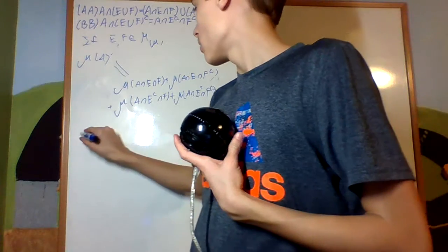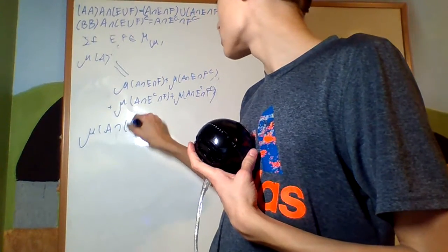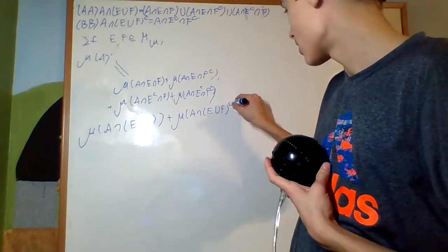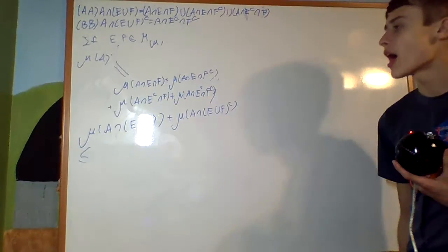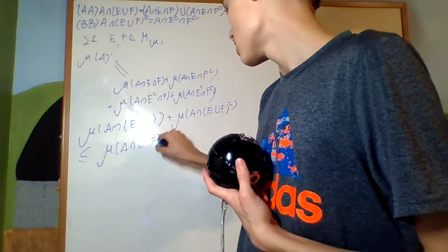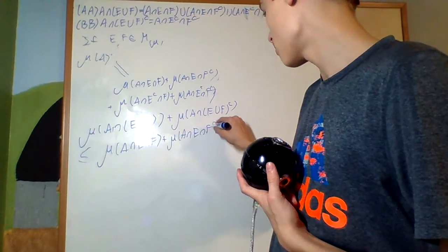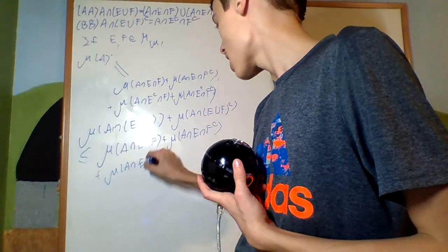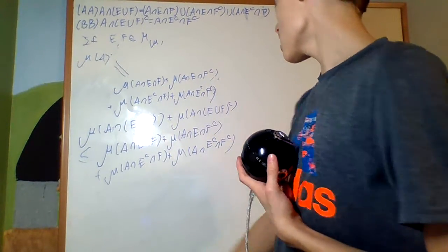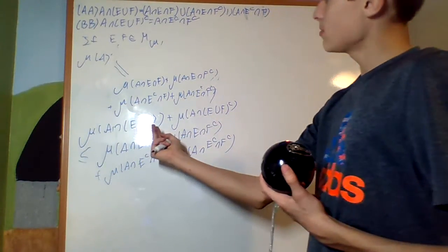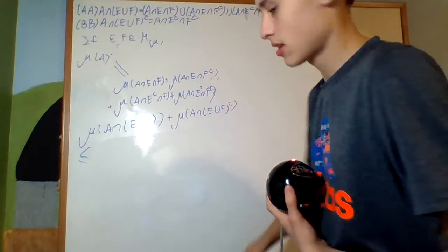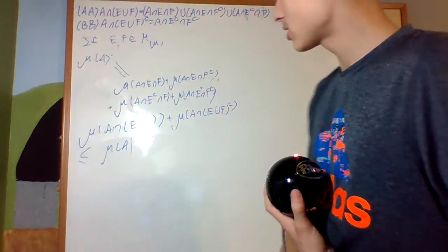Now let's study those sets. Looking at μ(A∩(E∪F)) + μ(A∩(E∪F) complement): because we have a union there, I can separate that into addition with a less-than-or-equal-to by subadditivity. So that's μ(A∩E∩F) + μ(A∩E∩F complement) + μ(A∩E complement∩F) + μ(A∩E complement∩F complement).